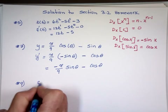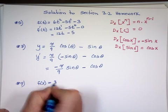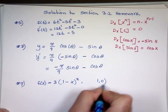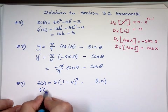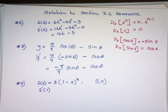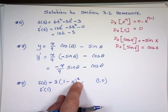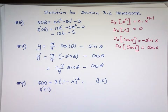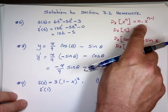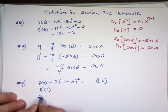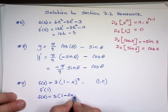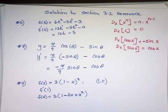Number 9. What is the derivative at x equals 1? We do not have a rule yet when the power is on the outside like that. So what I need to do is foil this out. If I foil 1 minus x times 1 minus x, you get 1 minus 2x plus x squared.